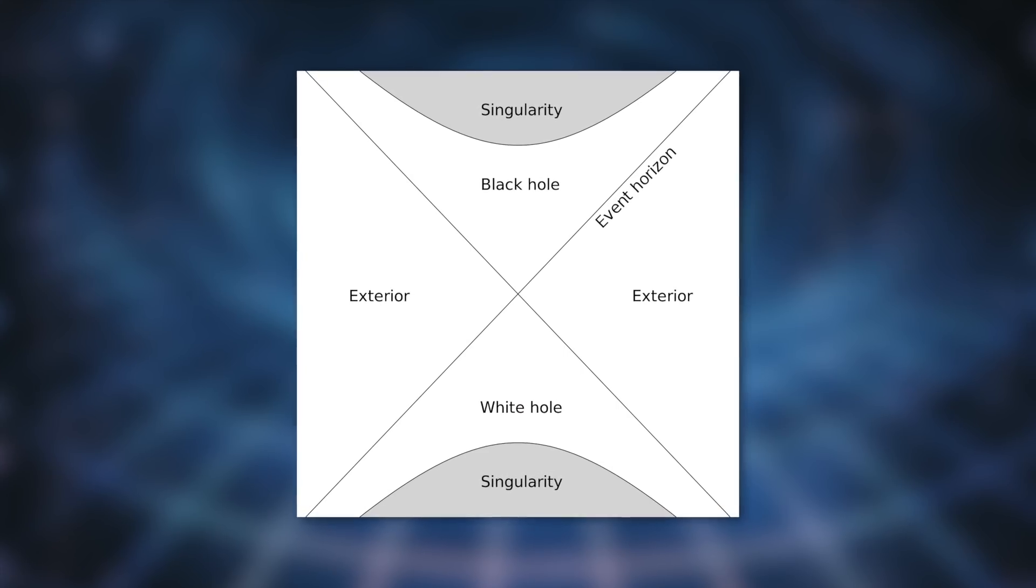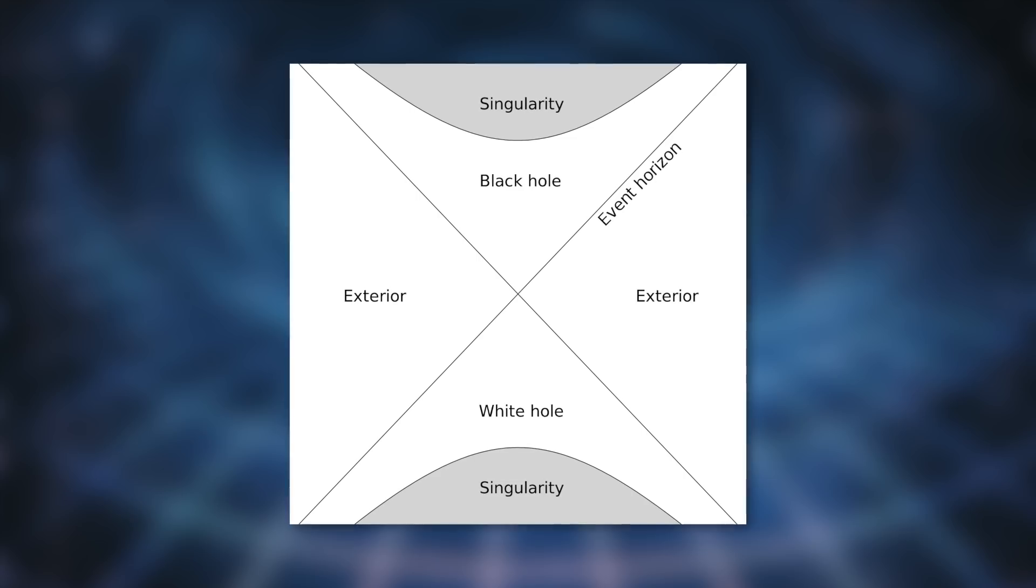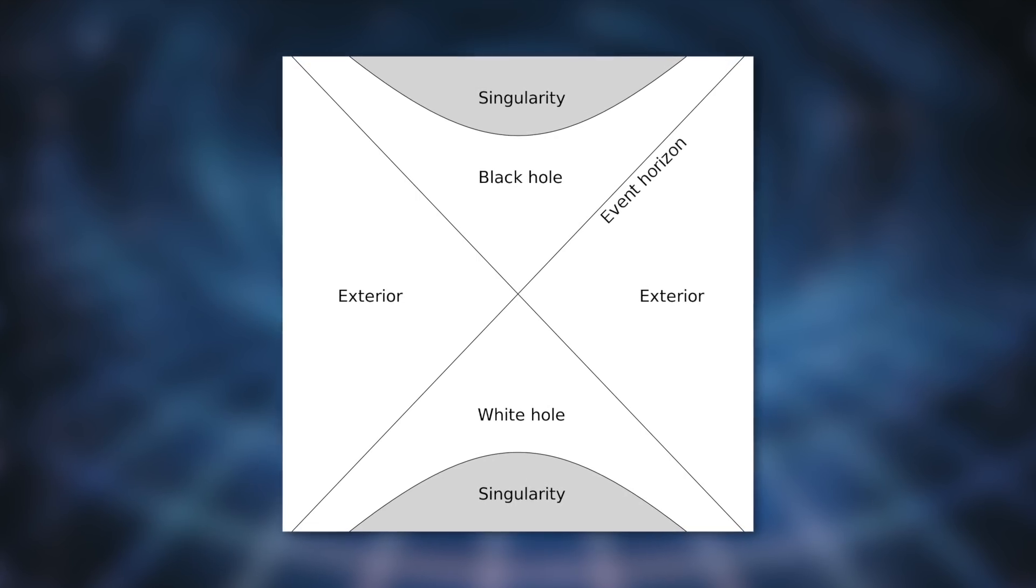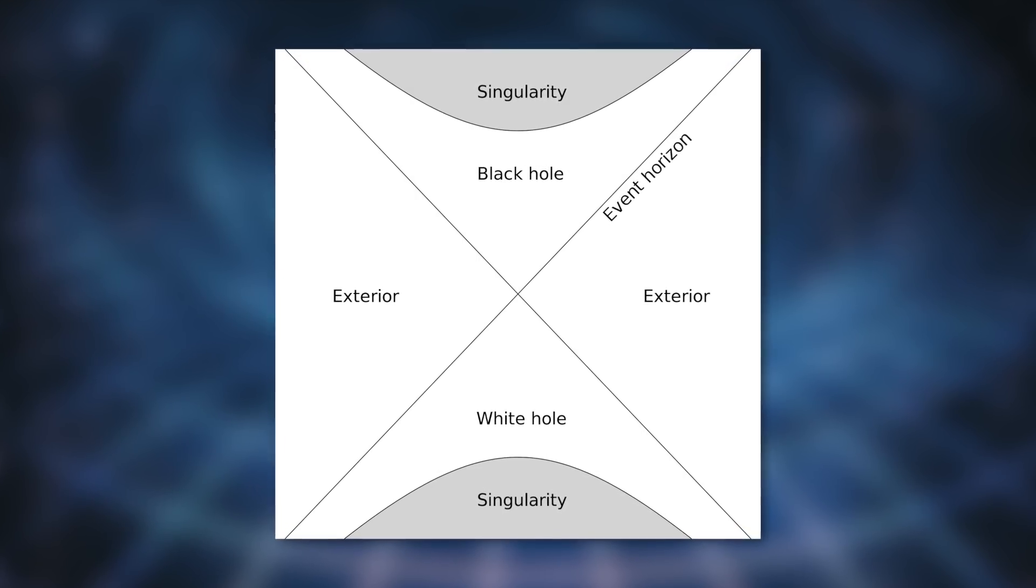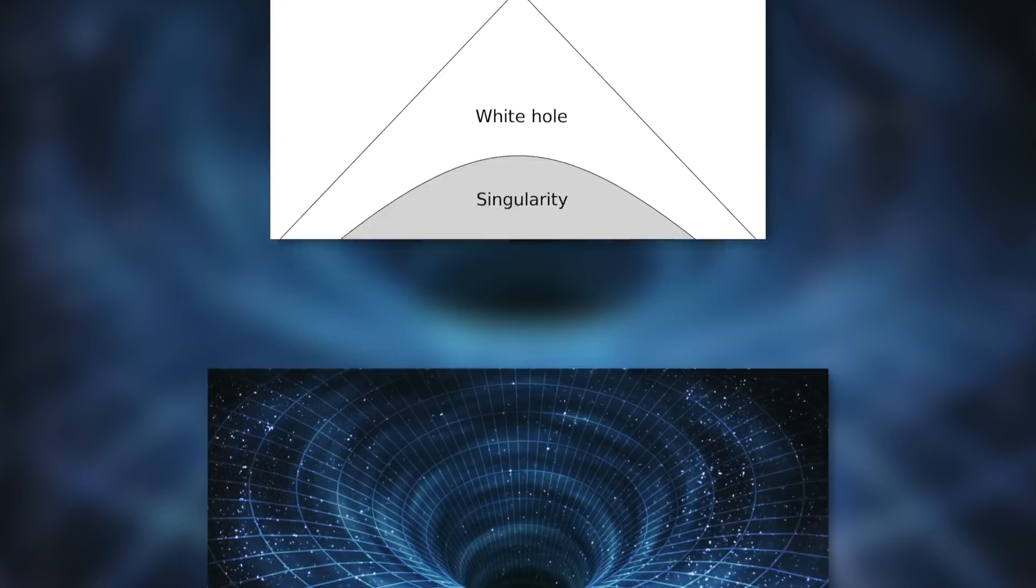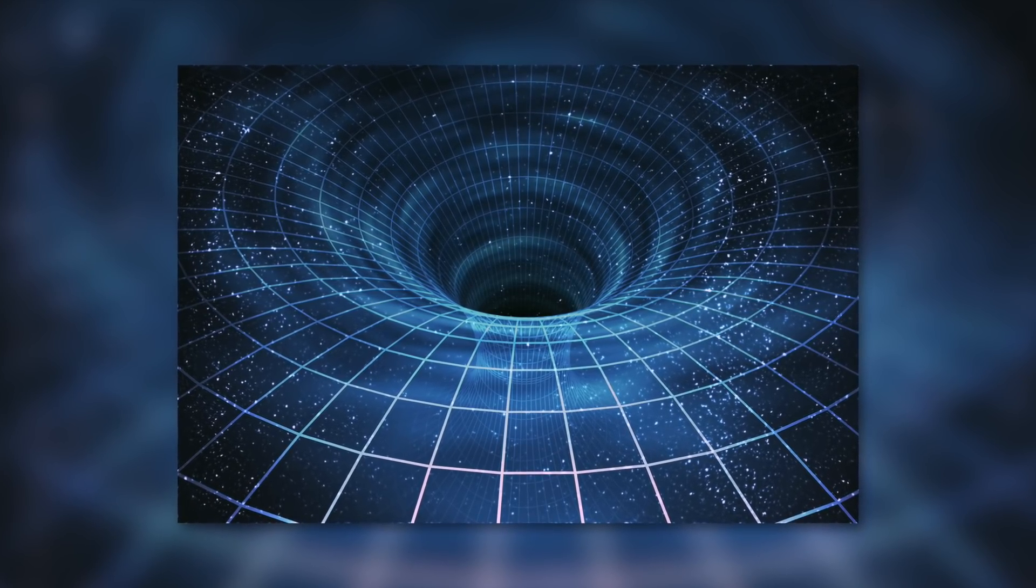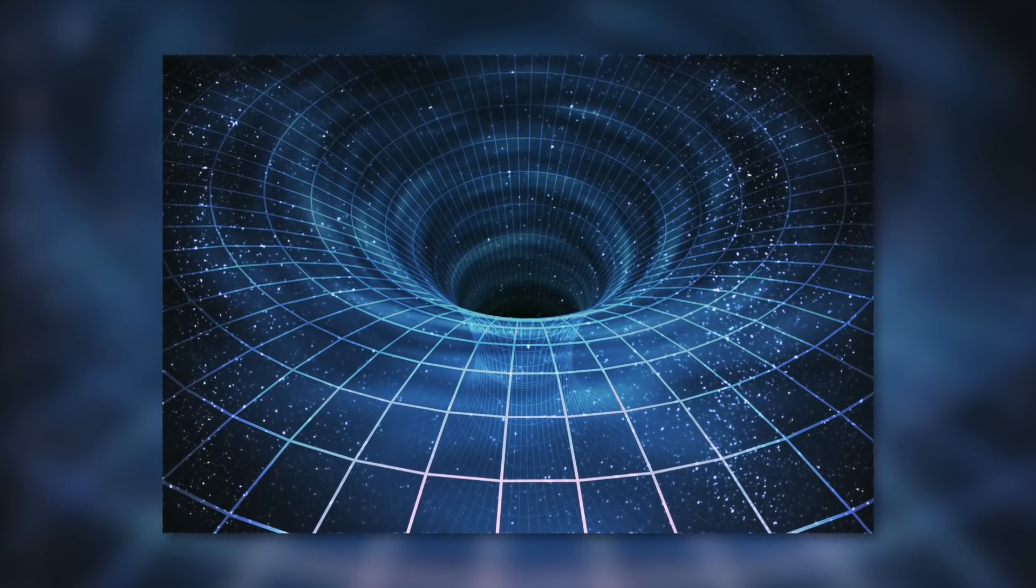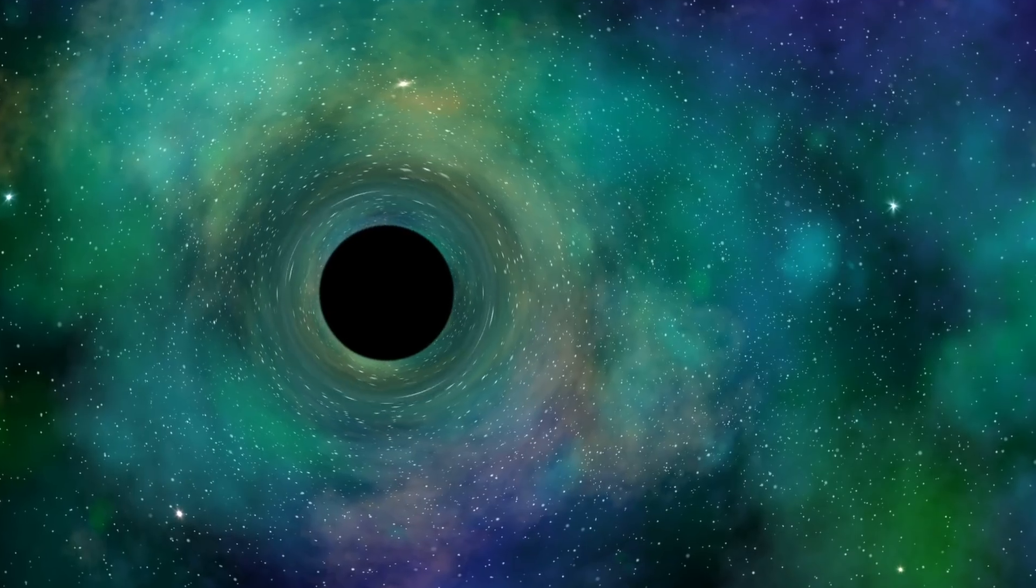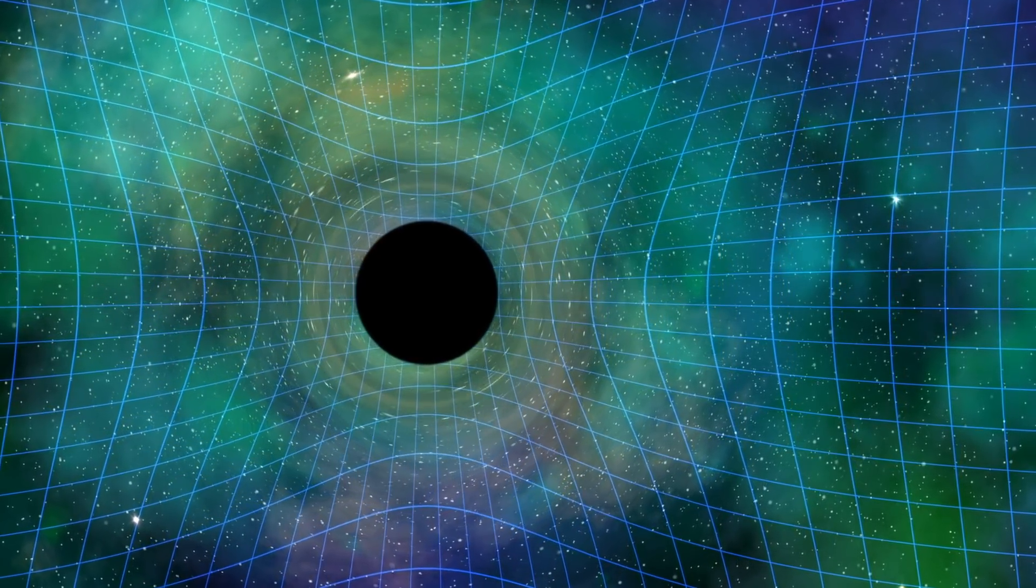If white holes do indeed exist, scientists agree that the objects have a singularity at their centers, just like their counterparts, the black holes. In simple terms, this singularity describes, in a physical context, a place where the prevailing gravitational force is so strong that the curvature of space-time is virtually infinite.